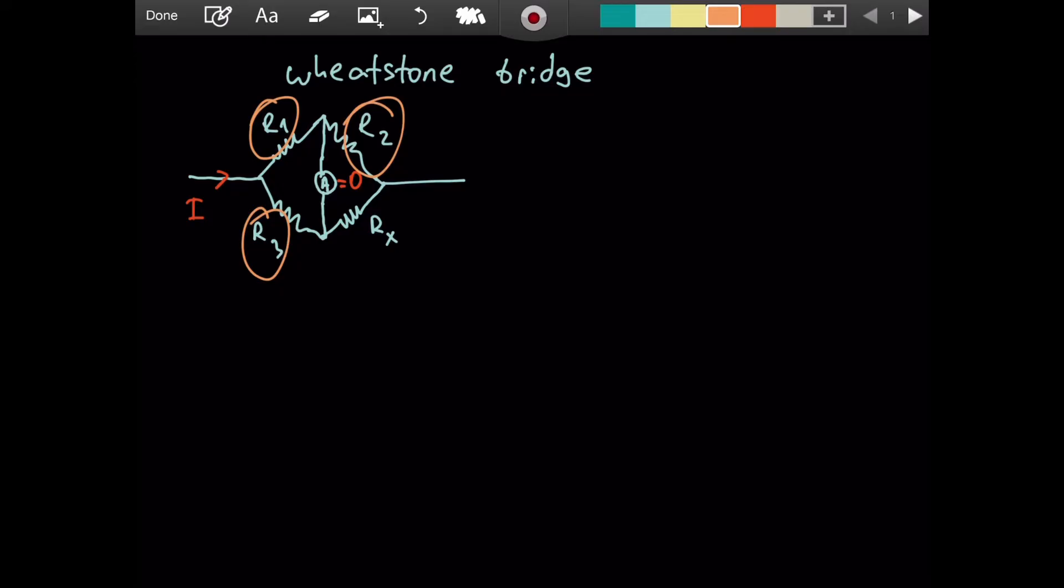A rheostat means that you can adjust the resistance value. So what you would do is, perhaps you have R1, and you are able to change the resistance of this rheostat. You will maybe slightly increase it, decrease it.